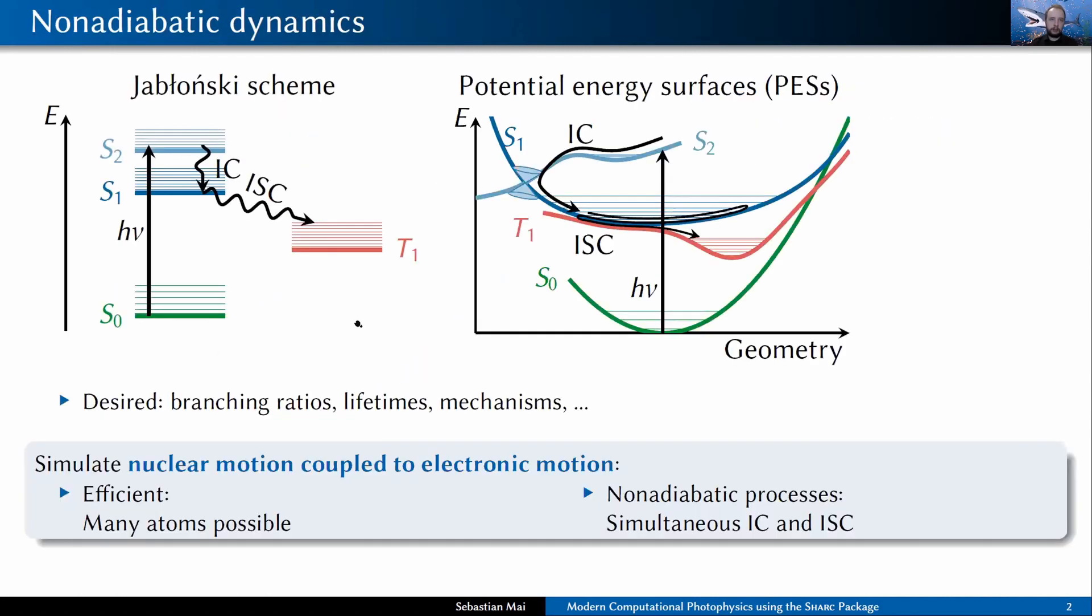To do so in a usable way, we need a theoretical method that can describe this coupled nuclear and electronic motion. Very important here is that this method is efficient on one side, so we want to be able to treat large systems with many atoms. On the other hand, we want to be able to treat non-adiabatic processes because otherwise we cannot describe photo-induced dynamics. Here, especially, we're interested in describing internal conversion and intersystem crossing simultaneously.